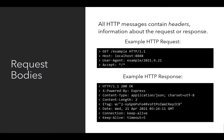All HTTP messages contain headers — information about the request or response. We have an example here of an HTTP request, and its headers are host, user agent, and accept. Notice the colon between the header and its corresponding value. The request has information about what host it's looking for, what was the user agent of the request, and what the corresponding response will accept.